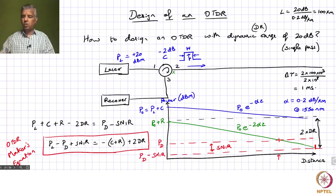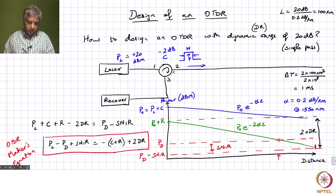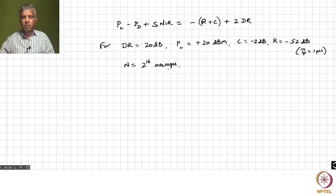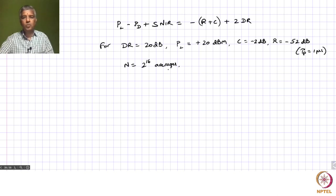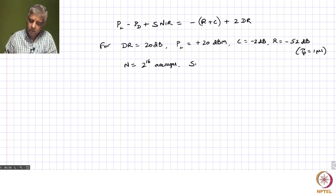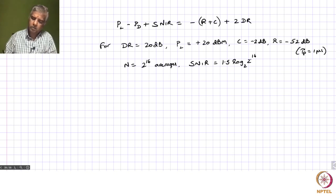In 1 ms you can complete one round trip, so you can do one average every millisecond. For 64,000 averages that takes 64 seconds, and with processing overhead maybe 100–120 seconds — about 2 minutes. So in 2 minutes you can do 2^16 averages, yielding a SNIR of 1.5 × 16 = 24 dB.